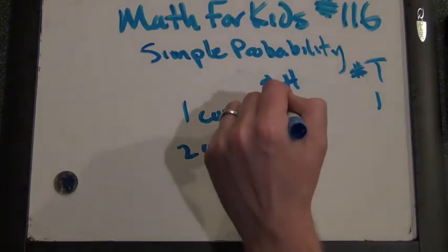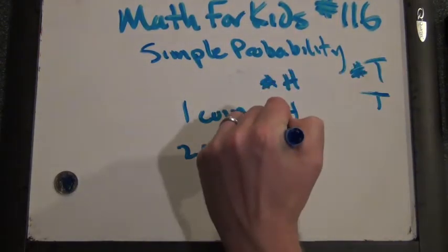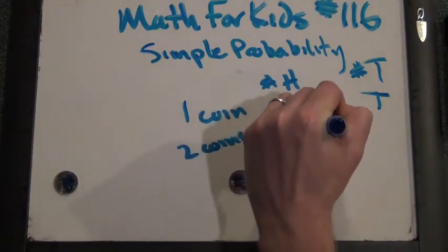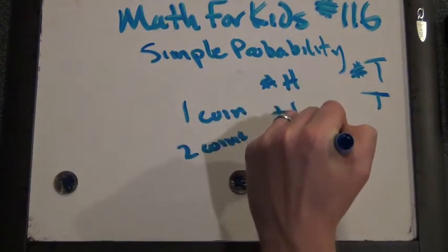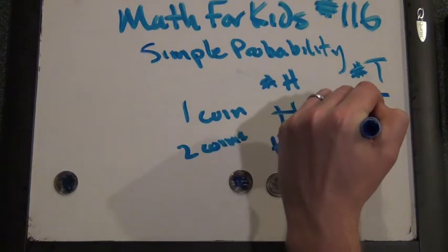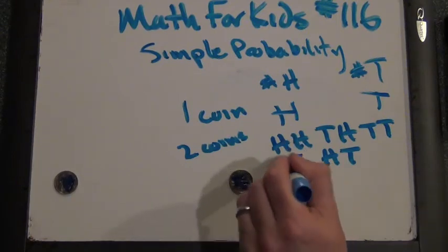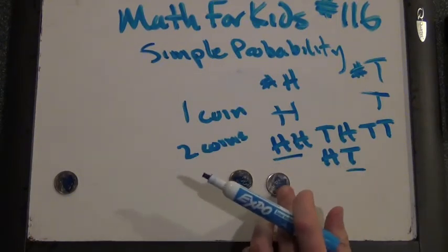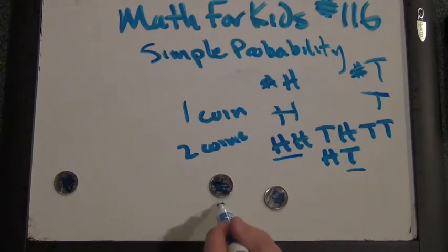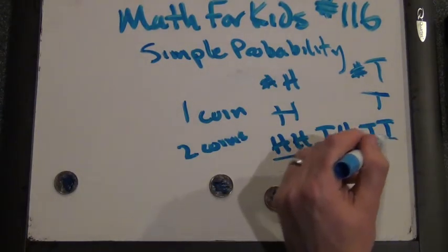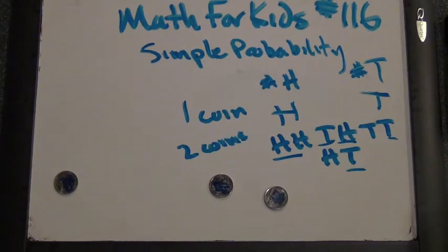So you can get head-head, tail-head, head-tail, or tail-tail. Does the order matter on this one? Well, that's what we need to see. The first coin you can get heads, and if you get heads for the first coin, you can get heads for the second coin or tails for the second coin. If you get tails for the first coin, you can get heads for the second coin or tails for the second coin.